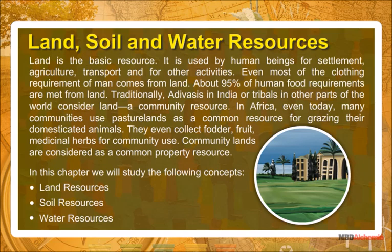Traditionally, Adivasis in India or tribals in other parts of the world consider land a community resource. In Africa, even today, many communities use pasture lands as a common resource for grazing their domesticated animals. They even collect fodder, fruit and medicinal herbs for community use. Community lands are considered as a common property resource.